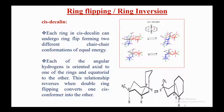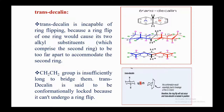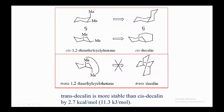Trans-decalin is incapable of ring flipping because a ring flip of one ring would cause its two alkyl substituents — which comprise the second ring — to be too far apart to accommodate the second ring. The CH2CH2 group is insufficiently long to bridge them. Trans-decalin is said to be conformationally locked; this conformation would essentially lead to breakage of the C–C bond, so the ring flip will not occur.